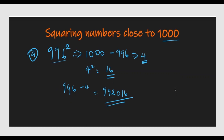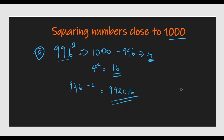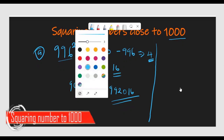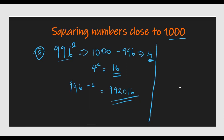This method makes calculation very easy. Let's look at another number — let's try 976 squared. The same procedure applies. An important thing is that you should know your tables up to 30 — you should be able to say what 30 squared, 29 squared, or 25 squared is — because that makes everything easier.